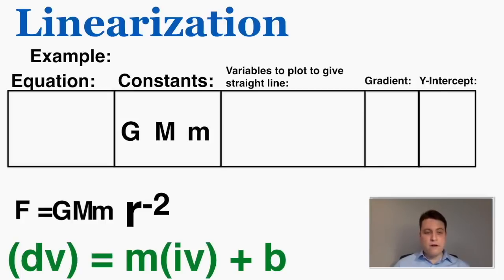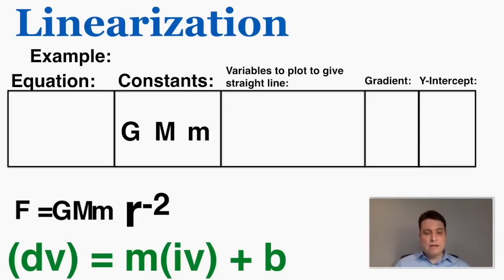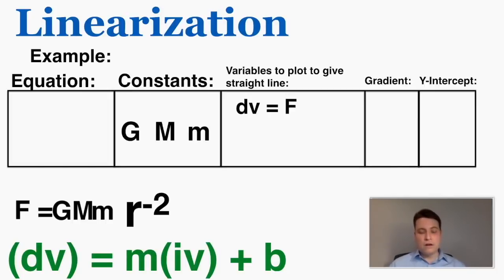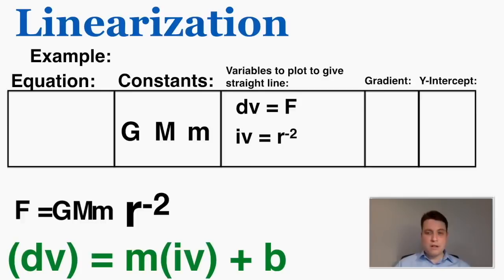One thing I can try is to get the constants onto one side of this fraction. A numerator over a denominator is equal to that numerator times one over the denominator — so I take the constants out and multiply them on the side. And now that I have one over r squared, I know that's actually equal to r to the power of negative two, since one over a variable to any power equals that variable to the negative version of that power. So now my dv is f, my iv is r to the power of negative two, the slope is G times M times m, and the y-intercept is zero.